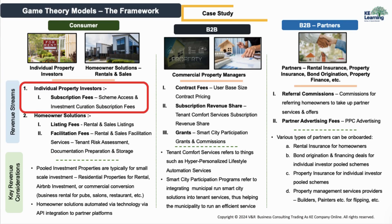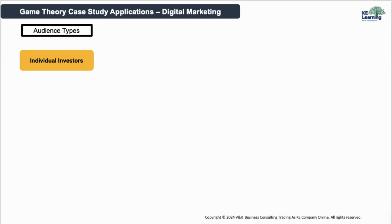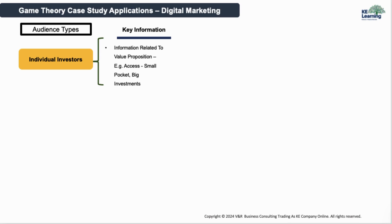We use our customer definition and value proposition definitions as inputs to our digital marketing audience definition. The obvious audience type is the individual investors — people looking to invest in property but don't quite have the large amounts of money or asset profile required to access finance for the type of property investments they want to engage in. The key marketing themes for this audience essentially revolve around getting access to opportunities to invest in property no matter their pocket size or what their asset base allows them to borrow.